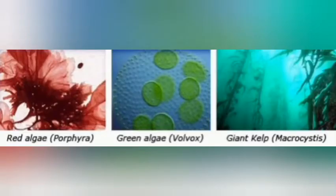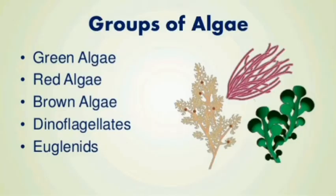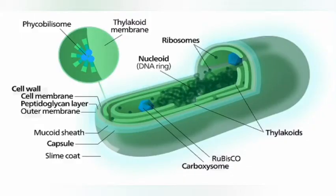Let us see the major groups of Algae. The ICBN — the International Code of Botanical Nomenclature — is the body that names living organisms. The ICBN classifies Algae into groups based on at least three points: one, the presence or absence of a definitively organized nucleus; two, the number, kind, insertion, or relative length of flagella; and three, the chemical composition of the cell wall.